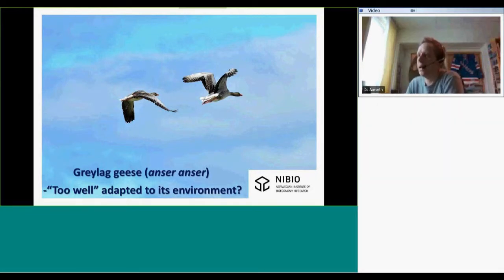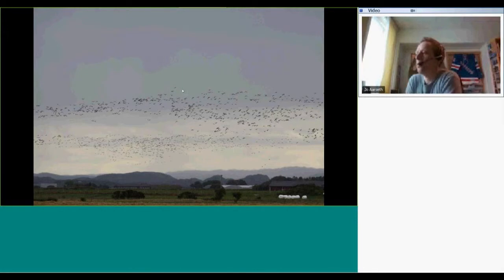This is a greylag geese couple flying away from the photographer. Here you see in the south of Norway in early autumn, hundreds or sometimes thousands of greylag geese are migrating southwards and they will land on these fields and totally eat all the grass that's there. So the greylag geese is feared by farmers, not only in Norway but also in Europe.